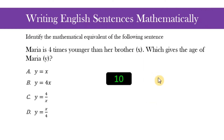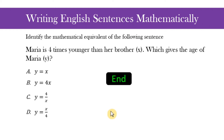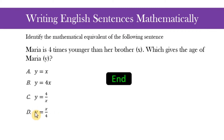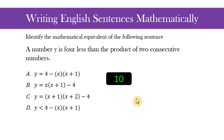Next: Maria is four times younger than her brother. We let x be the age of her brother and y be the age of Maria. Time's up. Letter A is incorrect — it says Maria has the same age as her brother. Letter B, y equals 4x, says Maria is older than her brother. The correct answer is letter D: y equals x over 4, meaning Maria's age is one-fourth the age of her brother.